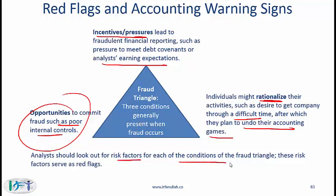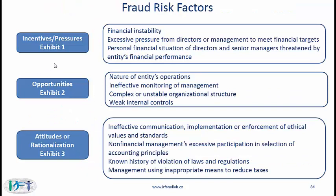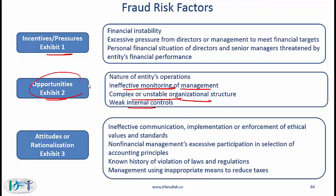Analysts should look out for risk factors for each condition of the fraud triangle, as these serve as red flags. Under incentives and pressures: the company has financial instability, there is excessive pressure from directors or management to meet financial targets, or personal financial situations of directors and senior managers are threatened by the entity's performance. Under opportunities: the nature of the entity's operations — heavily intertwined entities within a large corporation make fraud easier — ineffective monitoring of management related to weak internal controls, and a complex or unstable organizational structure where responsibilities are not clearly defined.